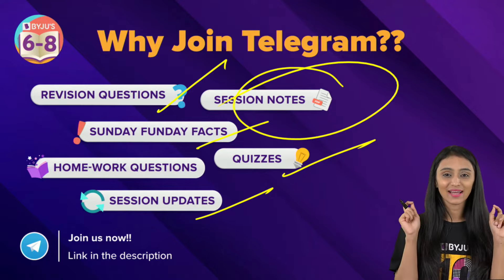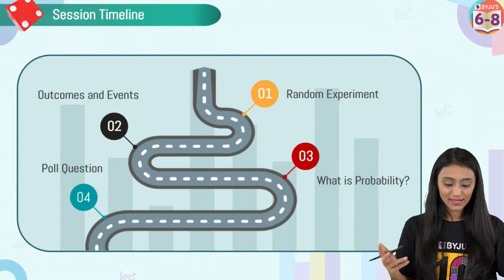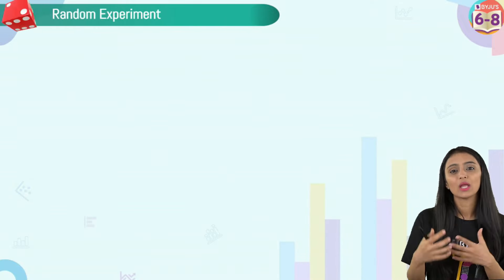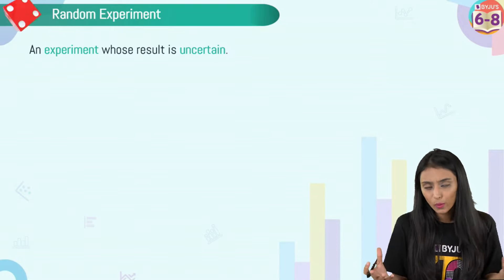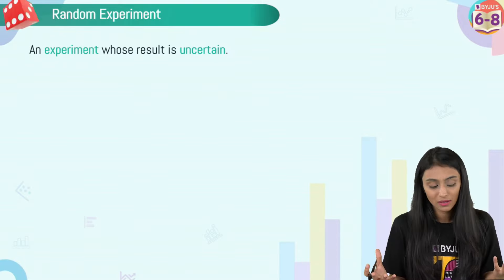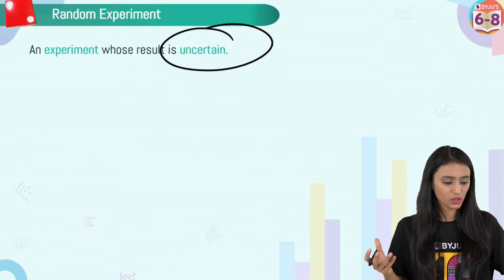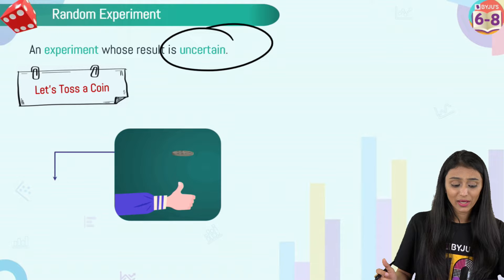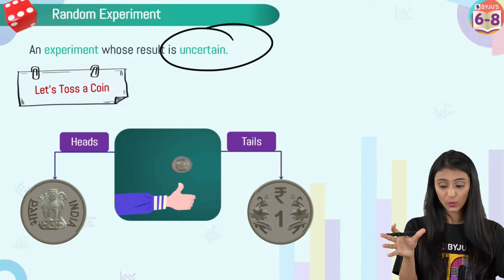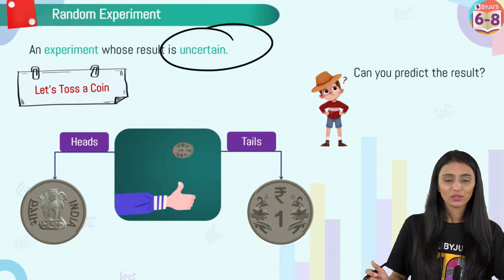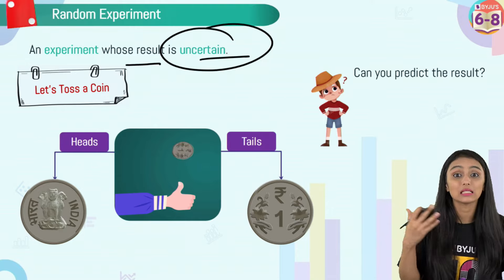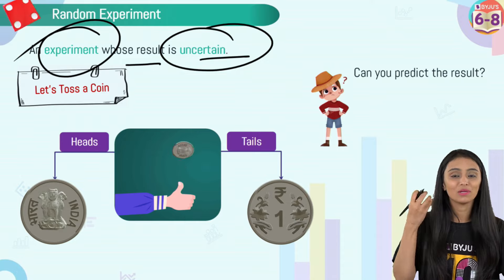Let's start with the first topic: random experiment. When we study probability, an experiment is one whose result is uncertain — we are not sure what the result will be. For example, tossing a coin gives either a head or a tail. We can only guess which will come up; we can't be sure. That uncertainty is what defines a random experiment.